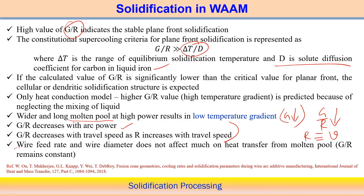When there is a change in wire feed rate and wire diameter, it does not much influence the two solidification parameters — not much effect on heat transfer in the molten pool. So G/R is not much sensitive to changes in wire feed rate and wire diameter. But G/R is much more sensitive to changes in arc power and welding travel speed.